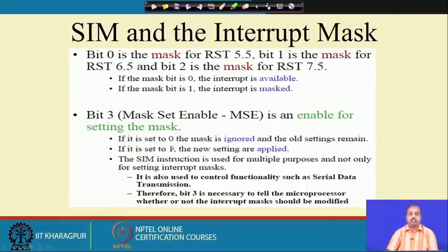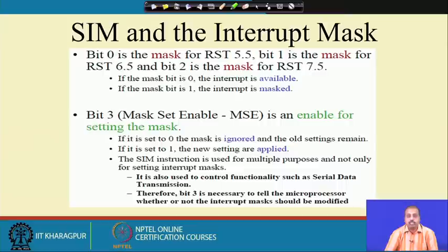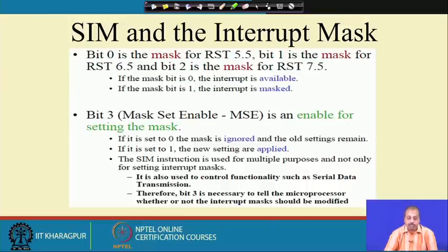In detail: bit 0 is the mask for RST 5.5, bit 1 is the mask for RST 6.5, bit 2 is the mask for RST 7.5. If the mask bit is 0, the interrupt is available; if the mask bit is 1, the interrupt is masked off. Bit number 3 is the enable for setting the mask — if 0, mask setting is ignored and previous settings continue; if 1, the new settings are applied.